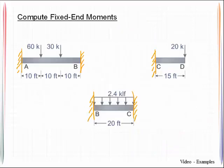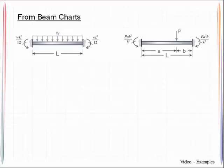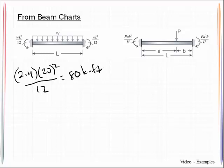The next thing we need to do is to compute the fixed end moments on our beams. Notice that member AB is a fixed fixed member, BC is a fixed fixed, and CD is nothing more than a cantilever. We'll go to look at our beam charts and for that member with the distributed load we will get 2.4 kips per linear foot multiplied by the length squared which is 20 squared over 12 and that will work out to be 80 kip feet.